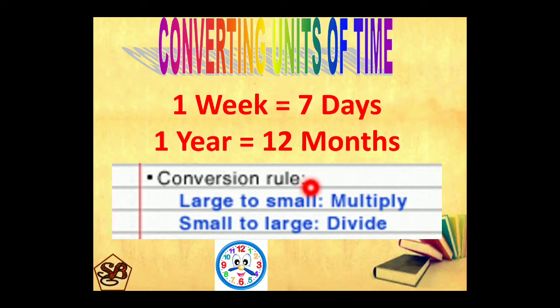The conversion rule remains the same. Larger to smaller unit we multiply, and smaller to larger unit we divide. When we convert weeks to days, we multiply by 7. And when we convert from days to weeks, we divide by 7.